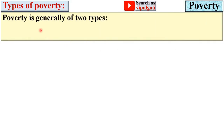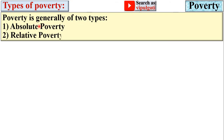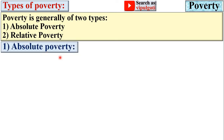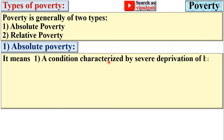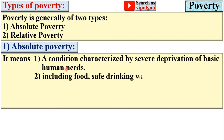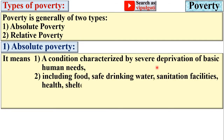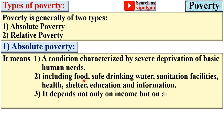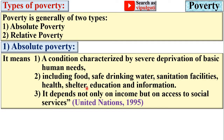Now, types of poverty. Poverty is generally of two types: absolute poverty and relative poverty. Absolute poverty means a condition characterized by severe deprivation of basic human needs, including food, safe drinking water, sanitation facilities, health, shelter, education and information. It depends not only on income but on access to social services. This is the definition of absolute poverty by the United Nations in 1995.